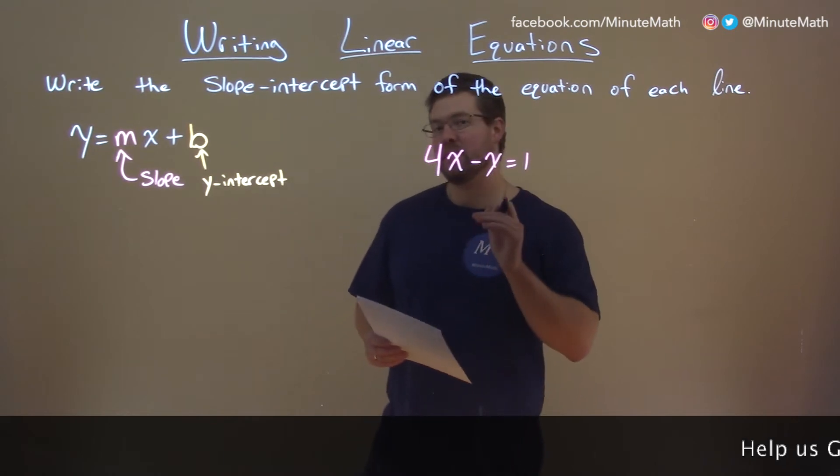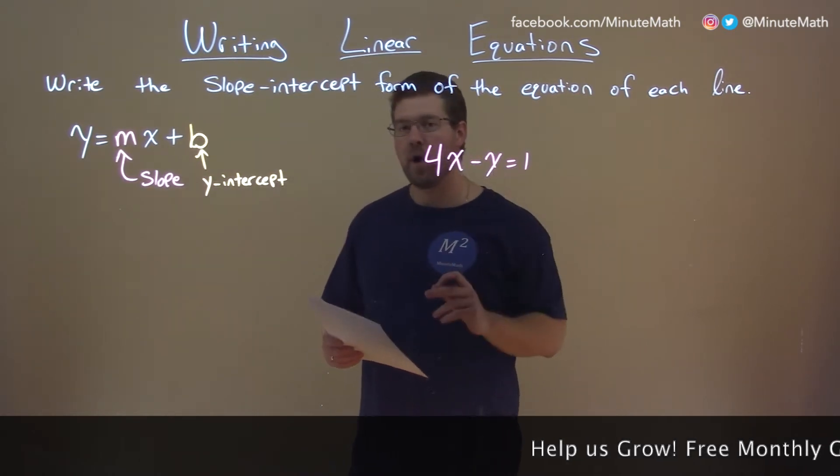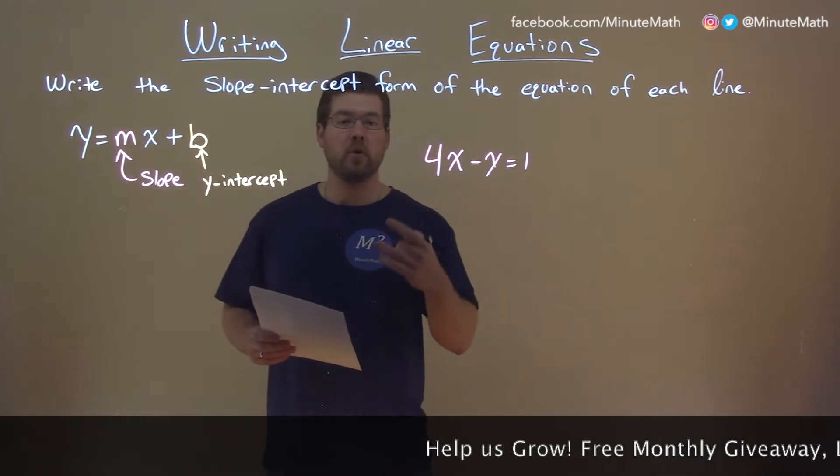So, if I was given this problem, 4x minus y equals 1, and we want to write that in slope-intercept form.